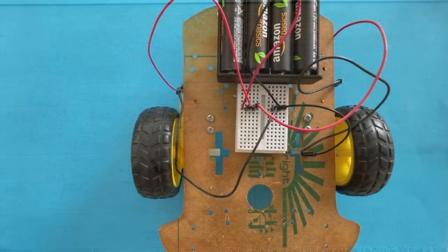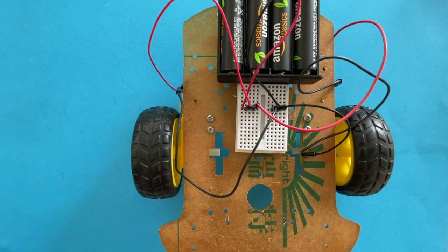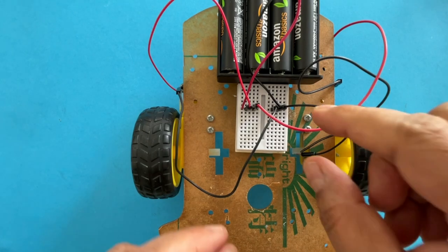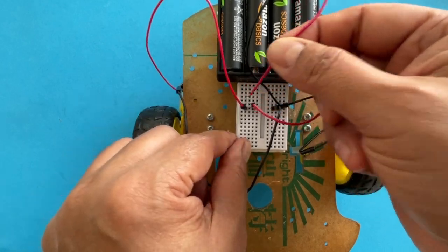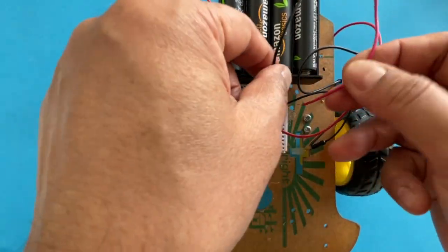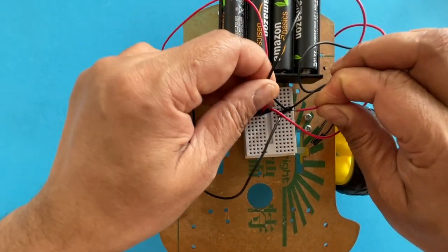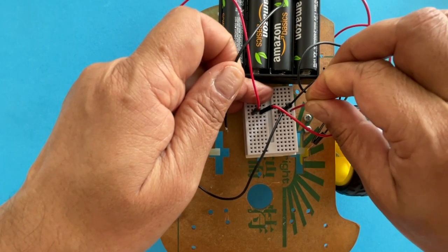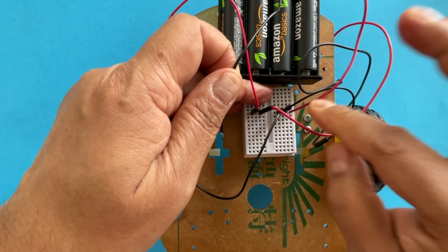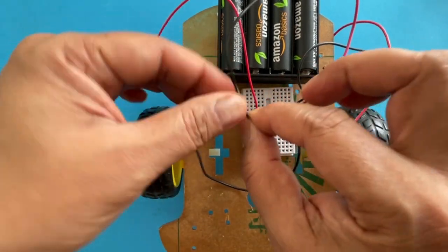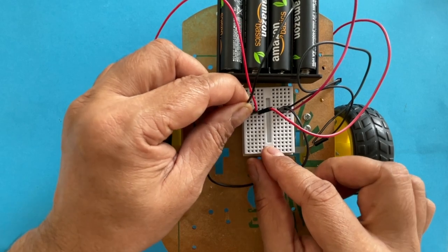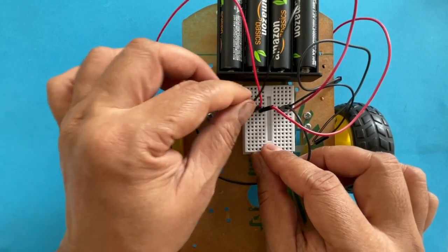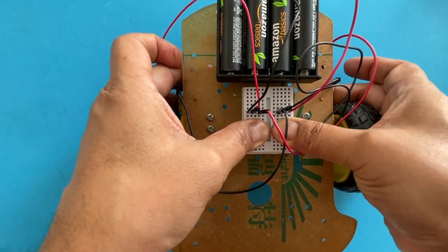To make the toy car go in the other direction, all we have to do is change the polarity. Take out the red or the positive wire from the battery and put it where the black or the negative wire from the battery is connected on the breadboard. The black wires from the two motors are now connected to the positive battery terminal. Take the black or negative wire from the battery and put it where the positive wire was earlier connected. The polarity of both motors has been flipped.